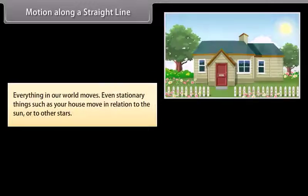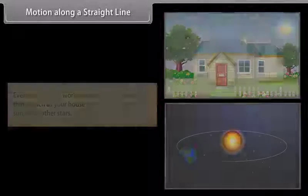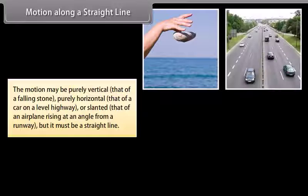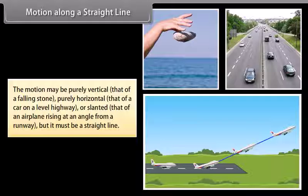Everything in our world moves. Even stationary things such as your house move in relation to the sun or to other stars. The motion may be purely vertical — that of a falling stone — purely horizontal — that of a car on a level highway — or slanted — that of an airplane rising at an angle from a runway. But it must be a straight line.